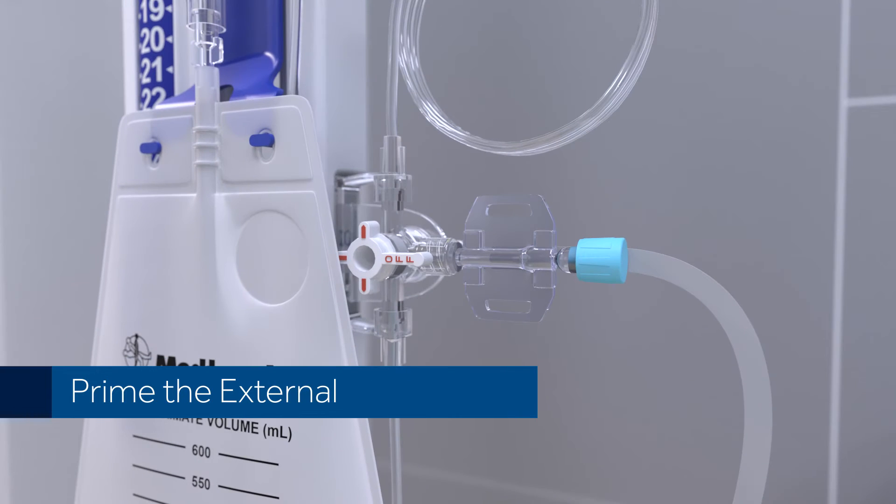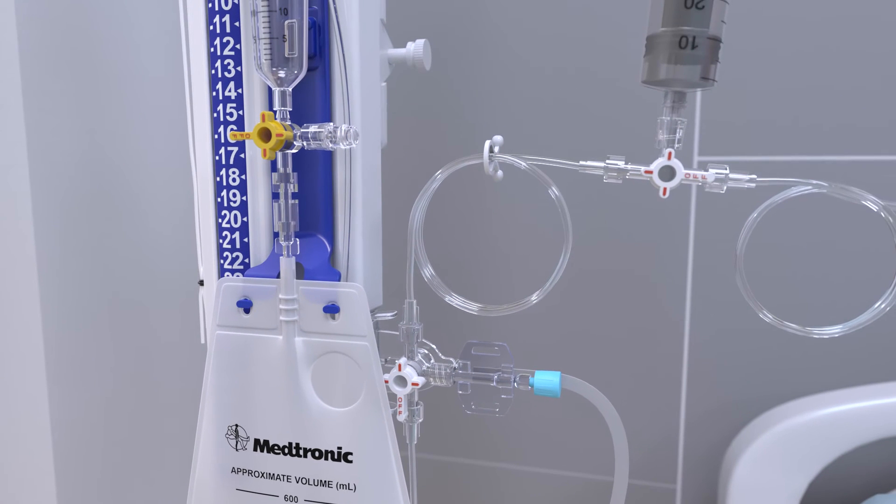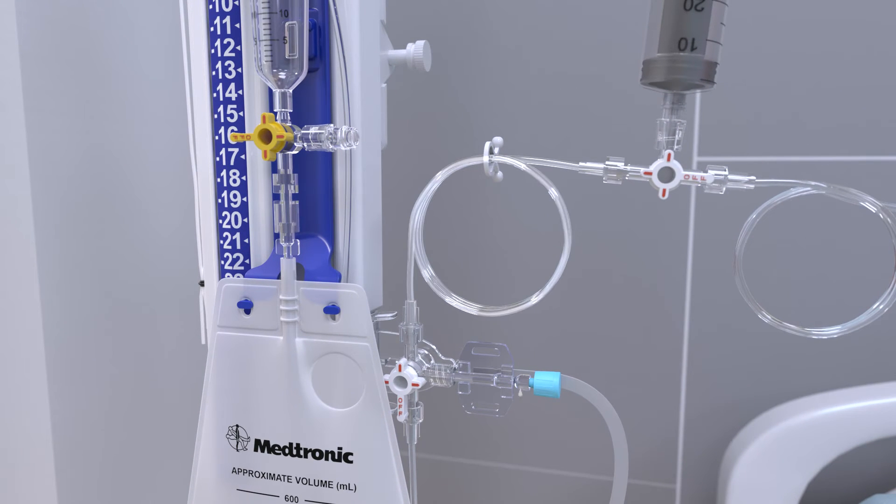If using a pressure transducer, prime it at this time. Using sterile technique, loosen the end cap on the transducer so fluid can flow through it. Rotate the main system stopcock as shown so fluid flows from the patient line through the transducer, flushing all air bubbles from the transducer. Once complete, retighten the end cap on the transducer.